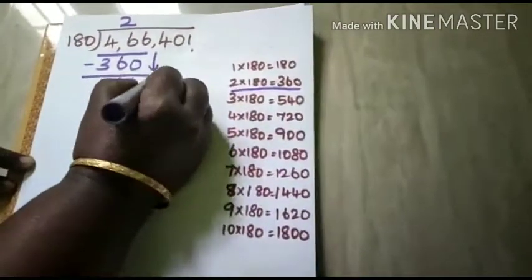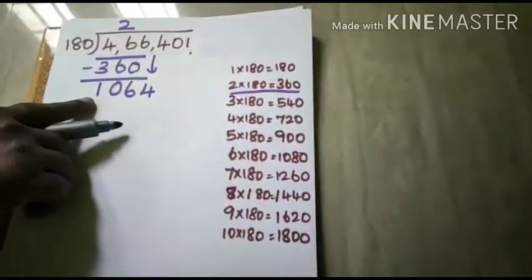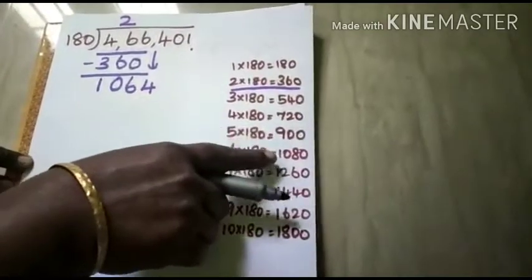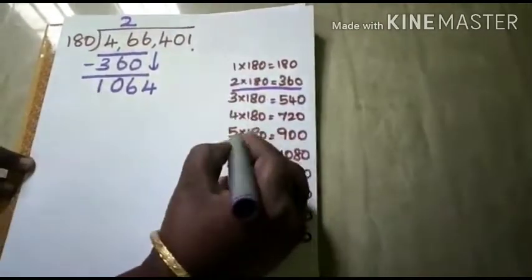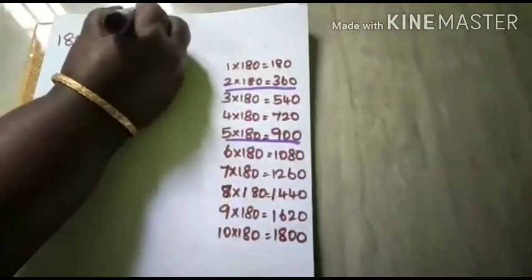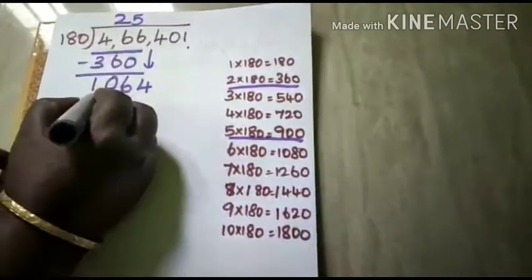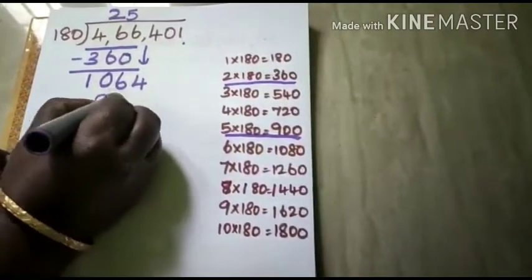Next you bring down 4. This number 1064 comes before 1080. How many times? 5 times. So 5 into 180 is 900.